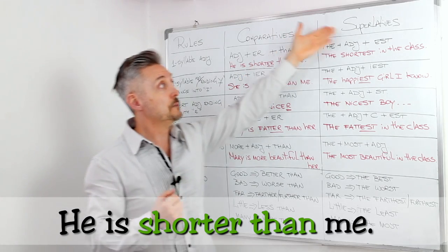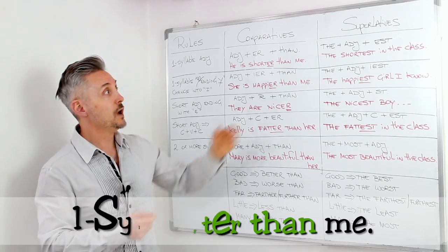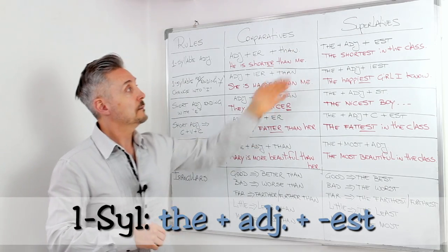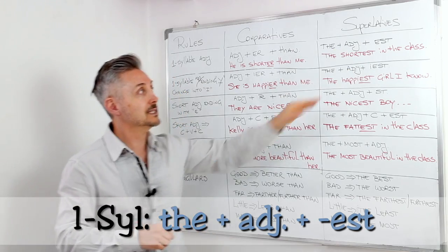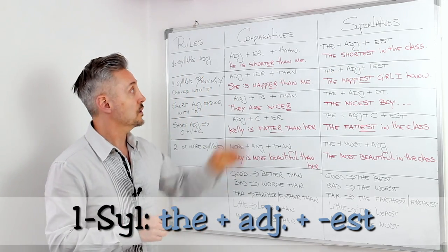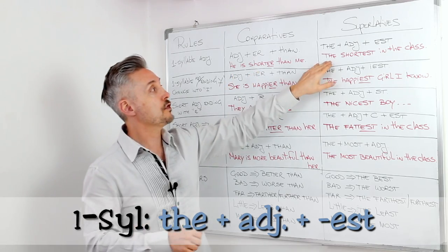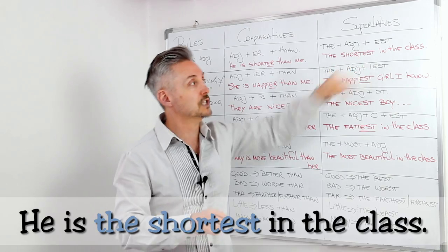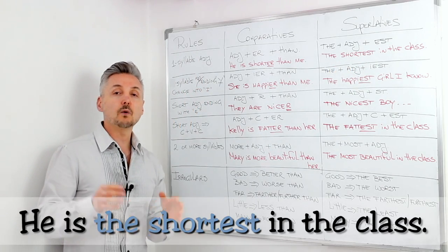For the superlatives, we need to add the, the article the, plus adjective plus est. So, the example here, always with short, the shortest in the class.